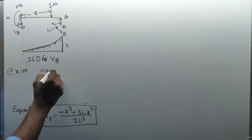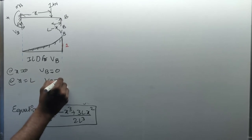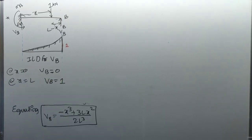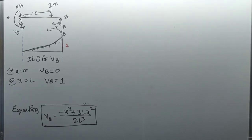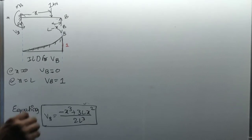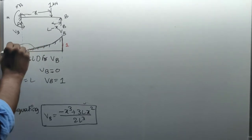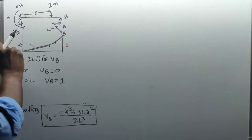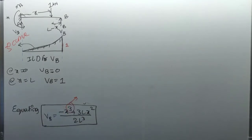Observe this equation: at x = 0, VB = 0; at x = L, VB = 1. So the equation is correct and matches Müller-Breslau's principle. The final conclusion for a propped cantilever beam is: when finding ILD for the reaction VB, lift that member by unit displacement and the deflected shape — a third-degree curve — is the ILD. Please do subscribe, thank you.